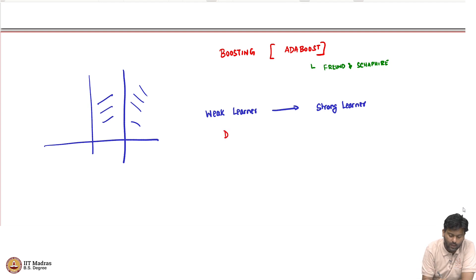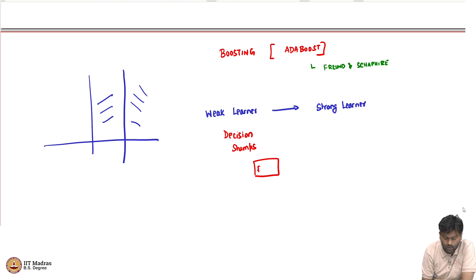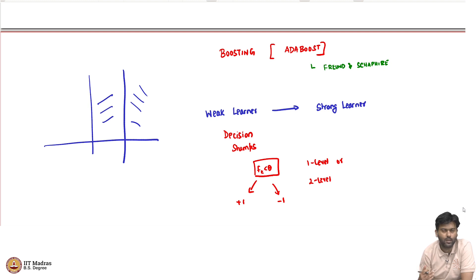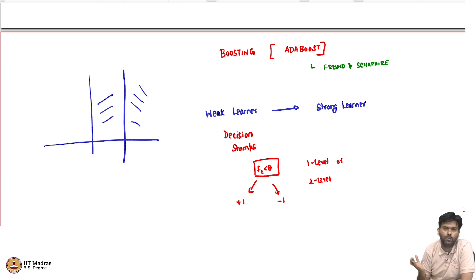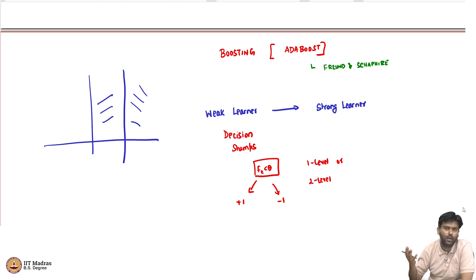A decision stump — which is what we typically talk about in boosting — is a one or two level classifier. You are asking one or two different questions to decide plus one or minus one. The typical height of a decision tree in practice would be something like 10 to 15, but cutting it at one or two gives a significant drop in accuracy. This is a very simple, high bias, low variance weak learner.